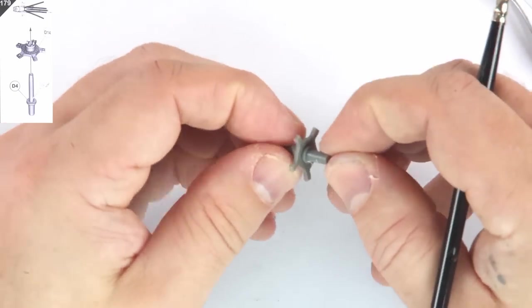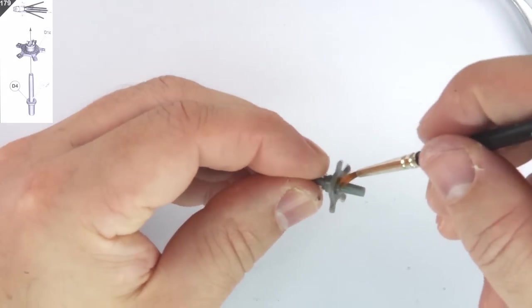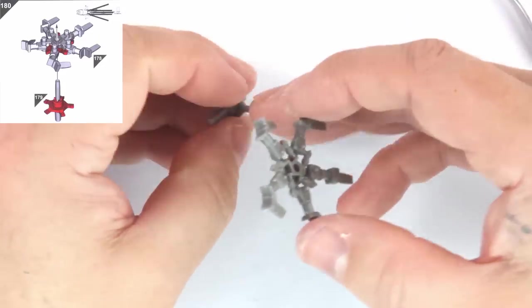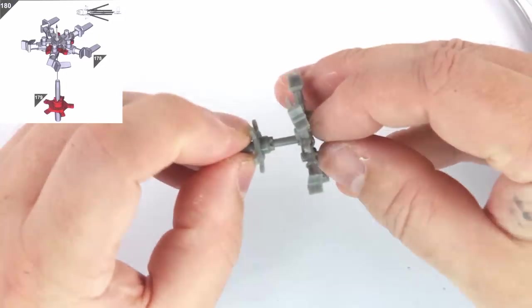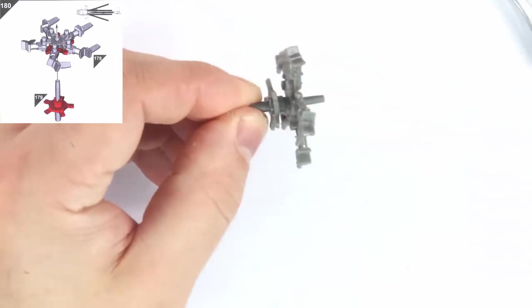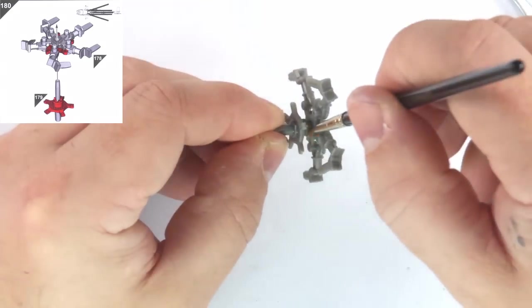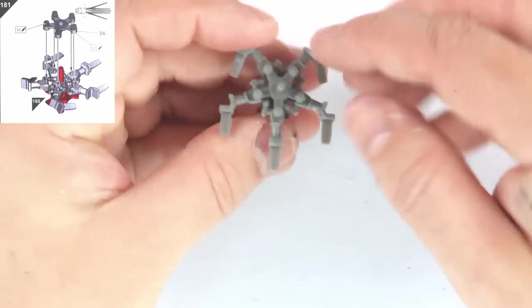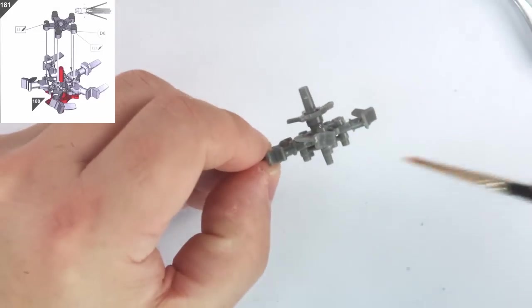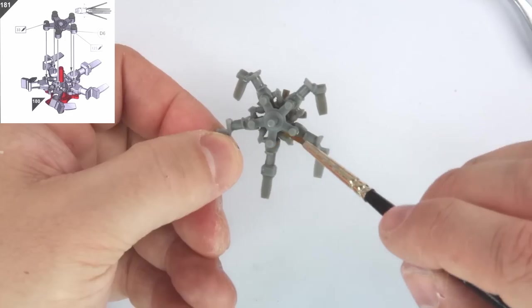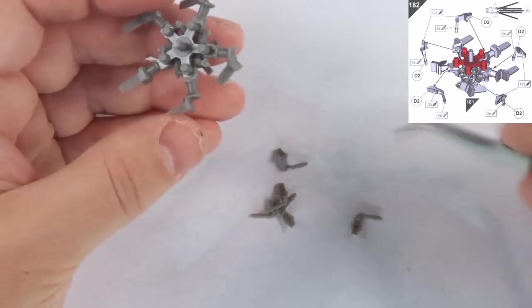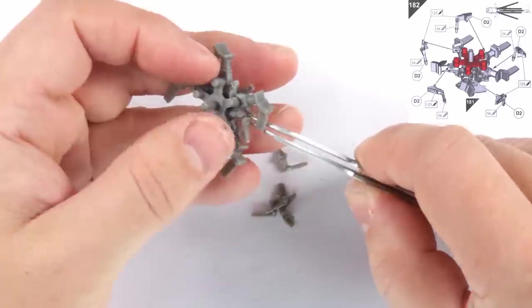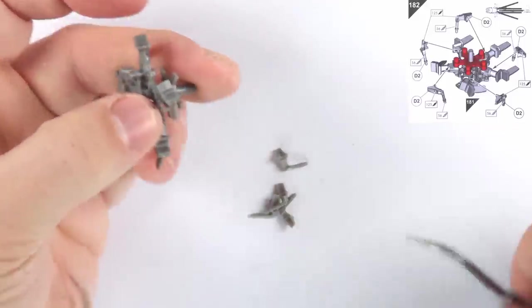After all of those small pieces, you get a brief reprieve in steps 179 through 181, where the main rotor shaft and the associated star-shaped pieces are all sequentially attached. Step 182 sees the tweezers return for these clever but fiddly linkages to complete the main rotor assembly.